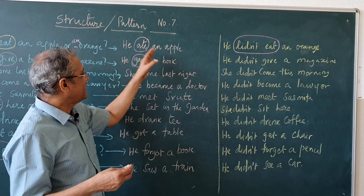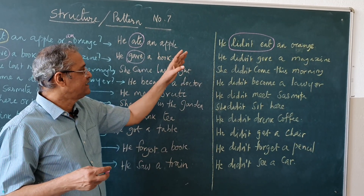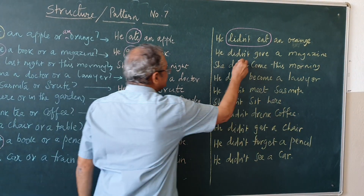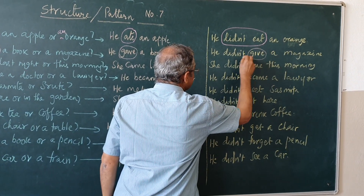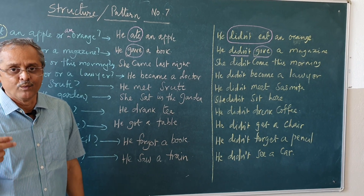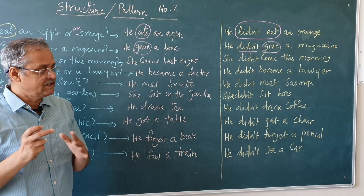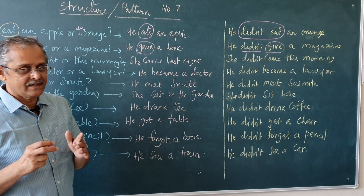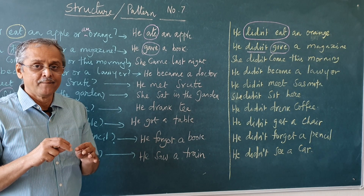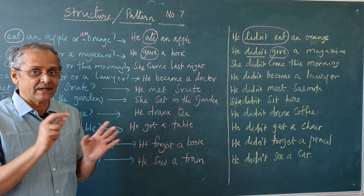He ate an apple. He didn't eat an orange. He gave a book. He didn't give a magazine. You see here — it cannot be 'didn't gave,' it is 'didn't give.' Focus on this, this is very important because we sometimes commit mistakes here. It should be: didn't eat, didn't go, didn't swim, didn't write, didn't read, didn't sit, didn't play, didn't construct, didn't drive. It cannot be 'didn't drove,' 'didn't constructed,' etc. That is why this practice is given to you.